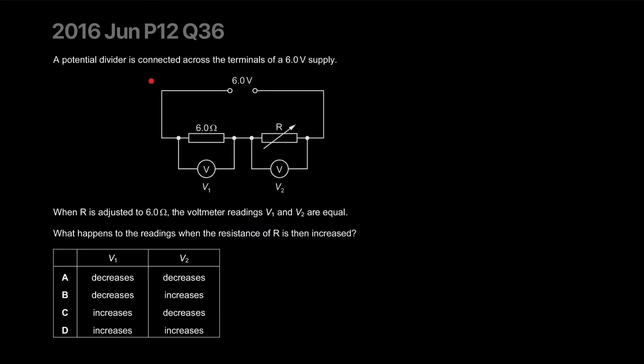A potential divider is connected across the terminals of a six volt supply. Here's a six volt supply, two resistors, two voltages across them in parallel. When R is adjusted to six ohms, the voltage readings V1 and V2 are equal. What happens to the readings when the resistance of R is then increased?